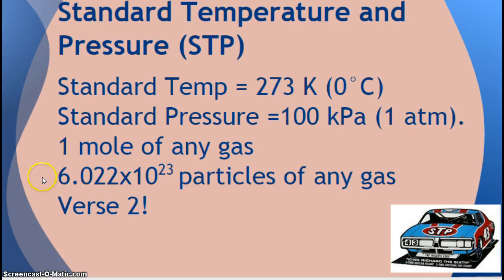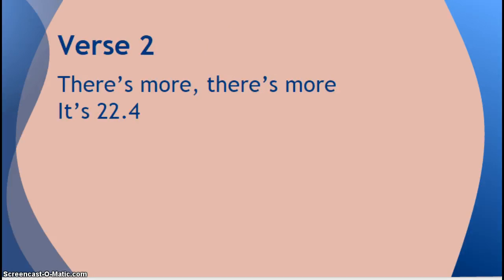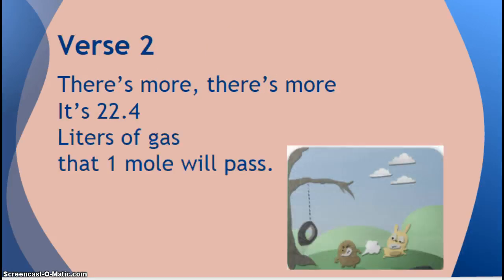So 1 mole of any gas has 6.022 times 10 to the 23rd particles of that gas. Now, if I have 1 mole at STP, because this part's true all the time, right? All moles always have 6.022 times 10 to the 23rd particles. But specifically at STP, if I happen to have a mole, not only do I have this many particles, but there's another number. That's right, verse 2. It's 22.4 liters of gas that 1 mole will pass.